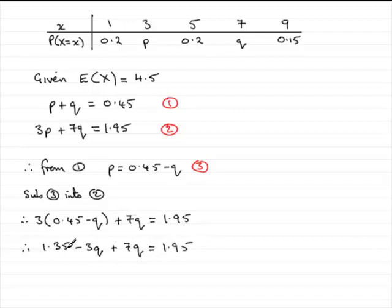Taking 1.35 from both sides and simplifying 7q minus 3q, we get 4q equals 0.6. Dividing both sides by 4, we get q equals 0.6 divided by 4, which is 0.15.